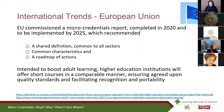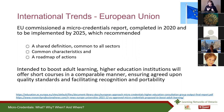Moving on in our world tour, a little bit of information on the European Union. As a whole group of countries — which is obviously even more challenging — they are trying to pull together some micro-credentials research and implement a strategy by 2025. You can see some of their characteristics of micro-credentials that they're trying to achieve. Their purpose statement is that the strategy is intended to boost adult learning — higher education institutions will offer short courses in a comparable manner, ensuring agreed-upon quality standards and facilitating recognition and portability. Interesting that the European Union is attempting to do this as a whole.